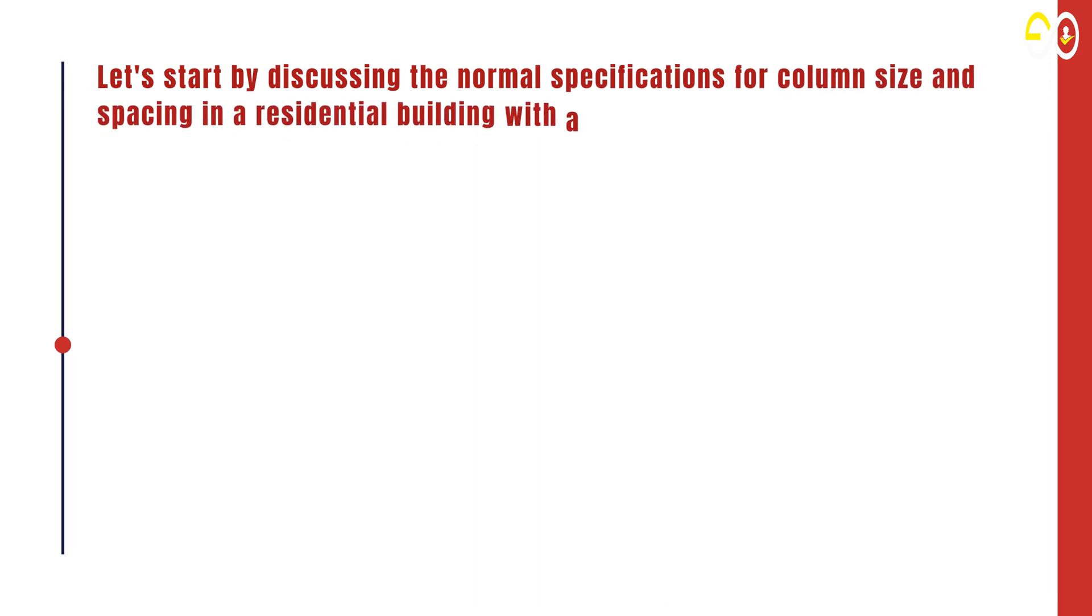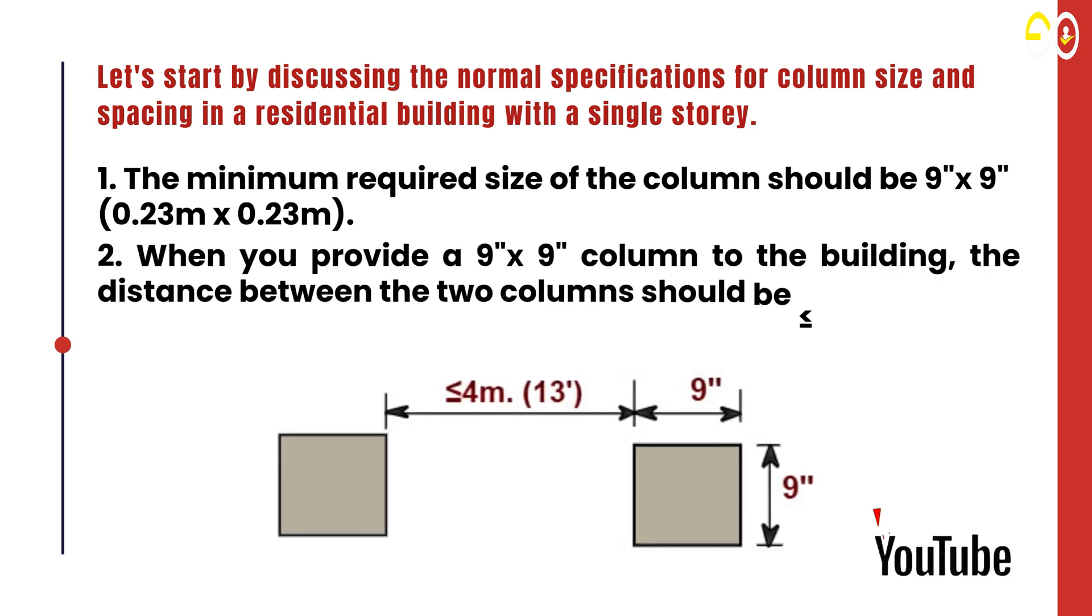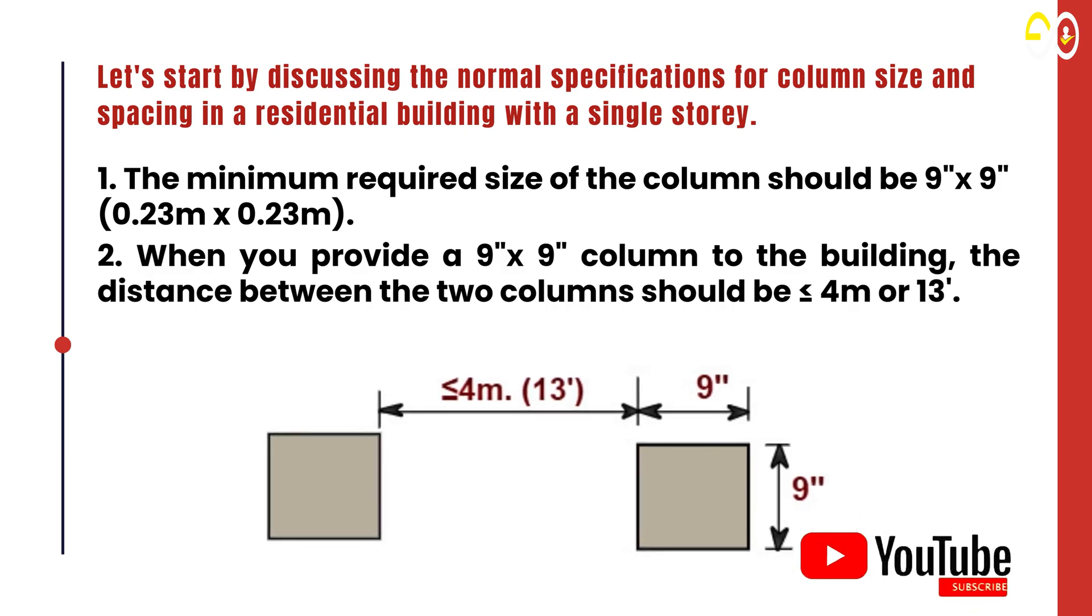Let's start by discussing the normal specifications for column size and spacing in a residential building with a single story. 1. The minimum required size of the column should be 9" x 9" (0.23m x 0.23m). 2. When you provide a 9" x 9" column to the building, the distance between two columns should be ≤ 4m (13').